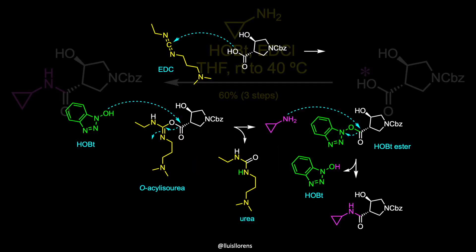In this amide coupling, the carboxylic acid is first activated by the carbodiimide to generate an O-acylisourea. Subsequent transesterification with hydroxybenzotriazole displaces the urea and delivers an active ester. The amine then attacks this ester, regenerating HOBt and delivering the desired coupled product.